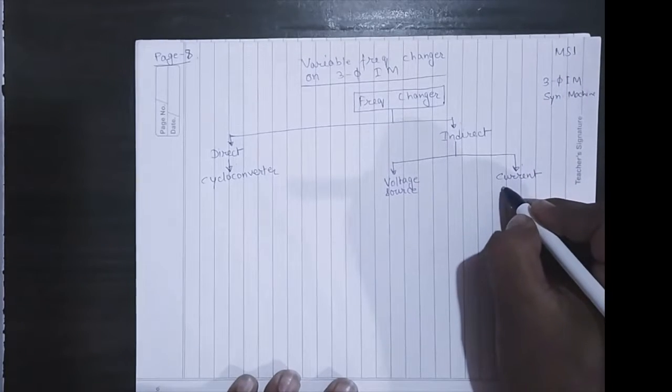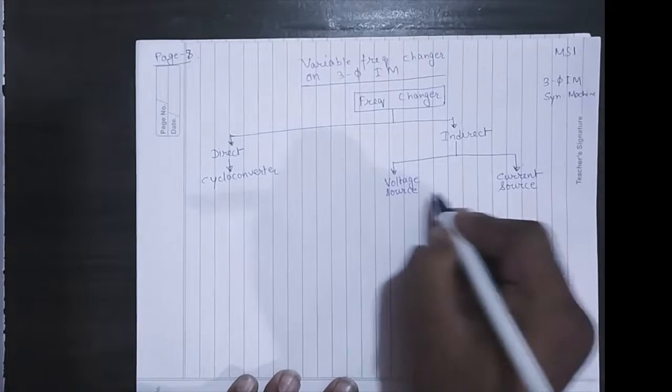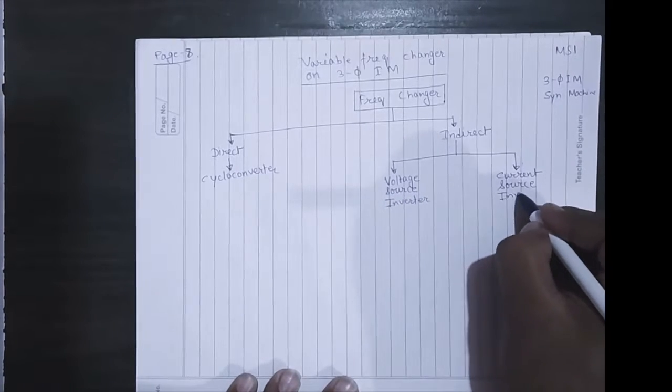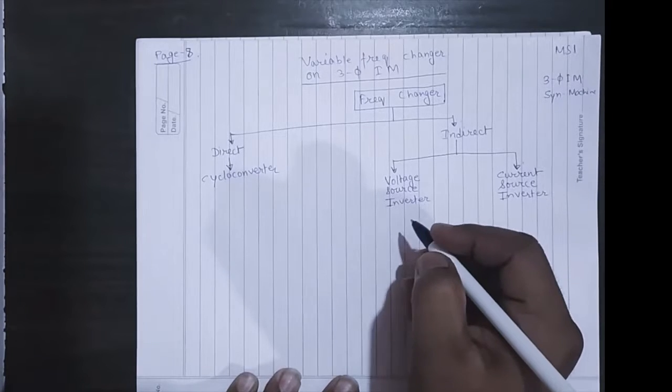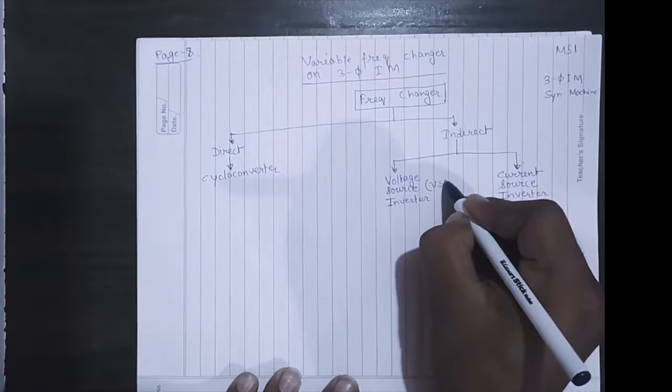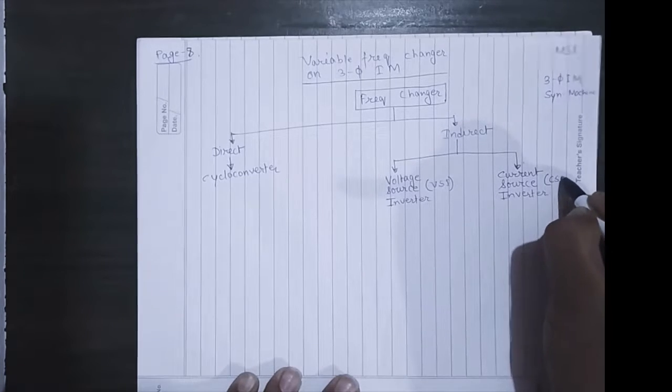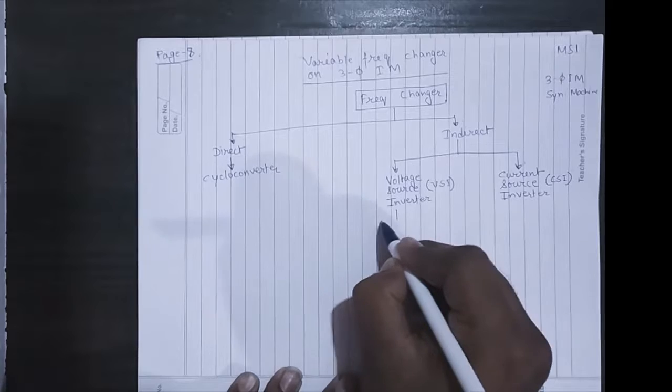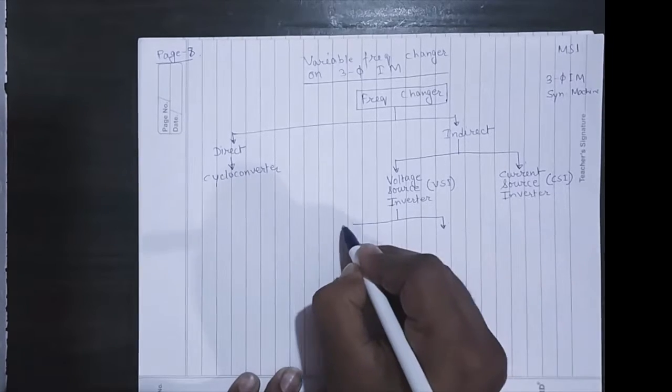And CSI or current source inverter. VSI can be denoted as VSI in most books, and current source inverter as CSI.